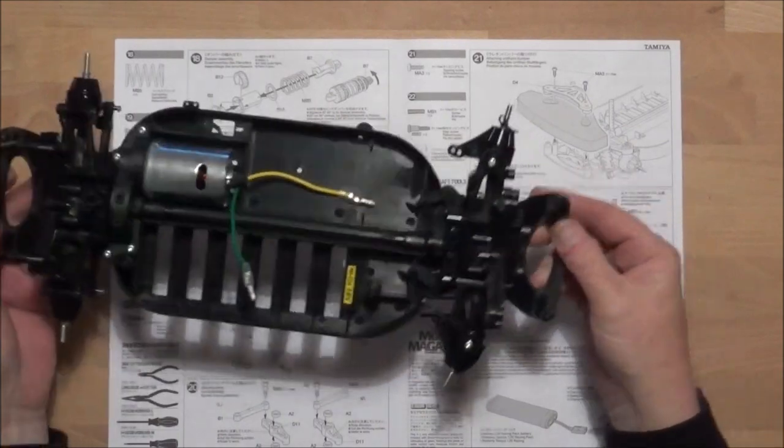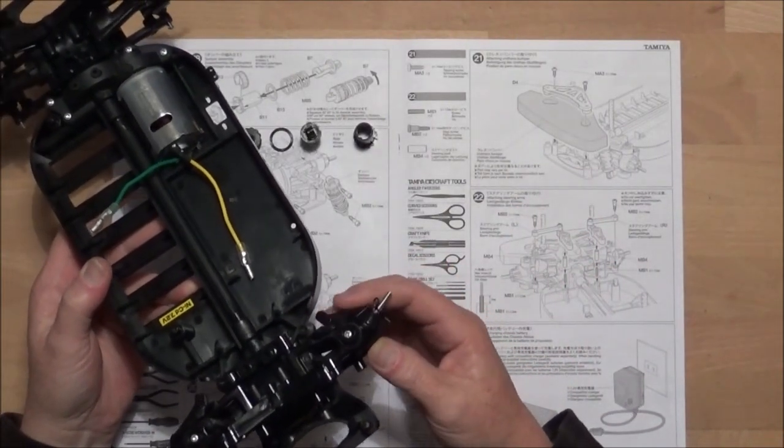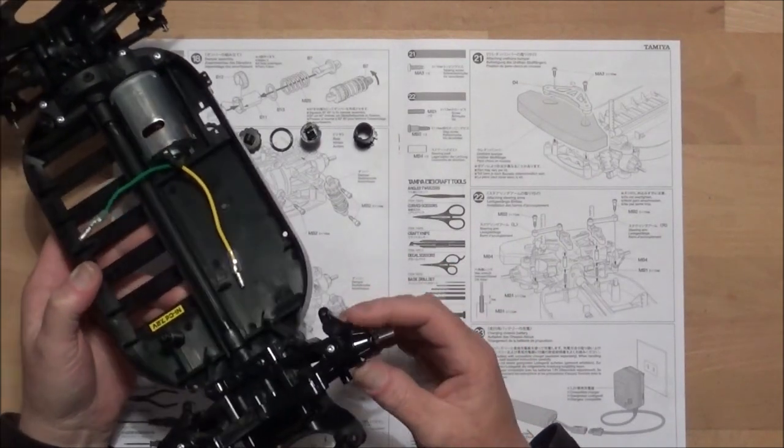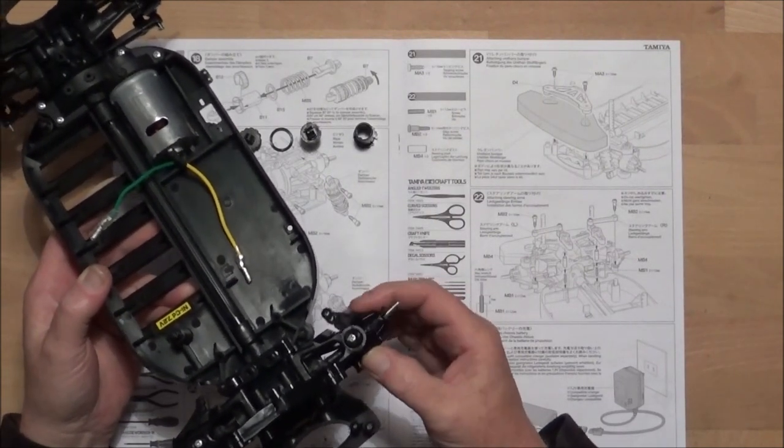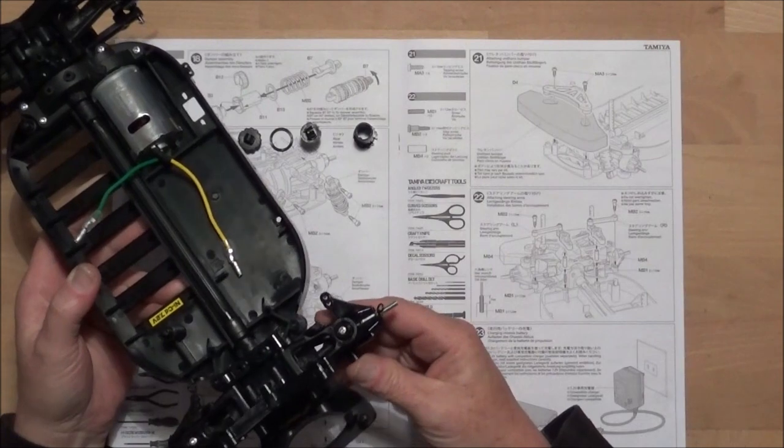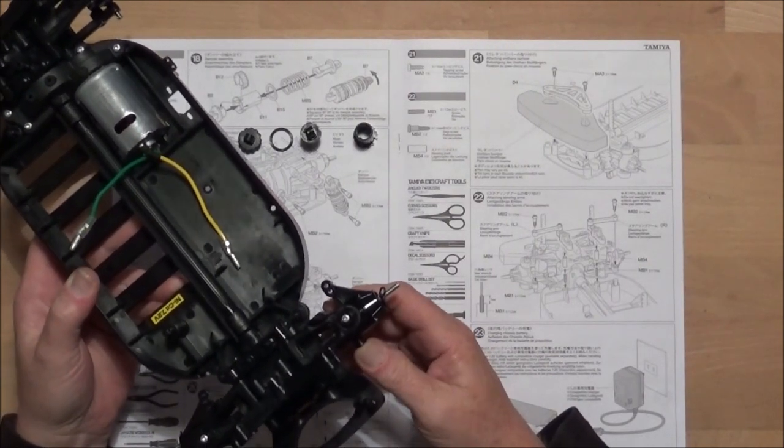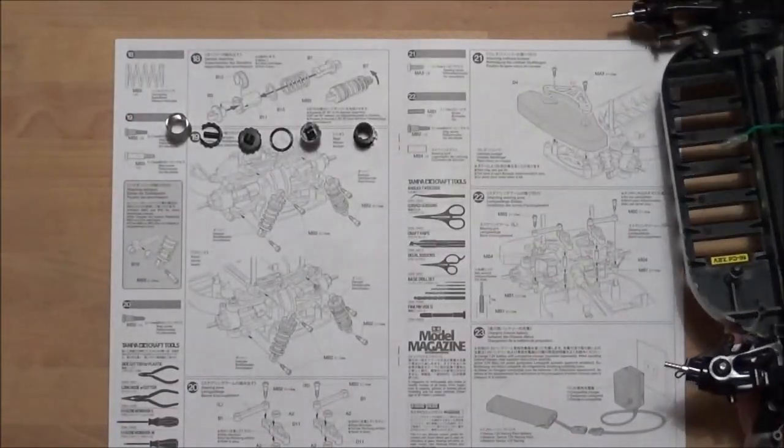Right so we've now got the front end sorted and I did find that tightening these up when you do both of them does stiffen up the steering a bit, so we'll see how we get on. There's to me a little bit too much play in the bottom wishbone but we'll see how we go with that. So we can now move on to step 18.